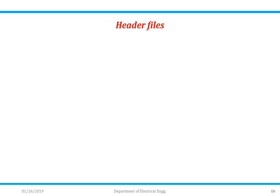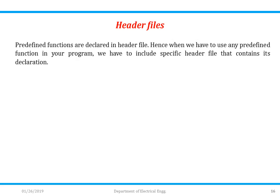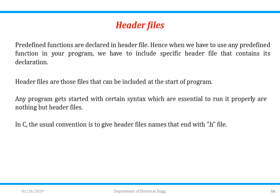What are the different header files in C? Predefined functions are declared in header files. When we use any predefined function like scanf or printf, we must include the specific header file that contains its declaration. Header files are included at the start of a program — that is why they are called header files, because they always head your program. In C, the convention is to give header file names that end with the .h extension.